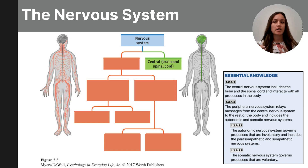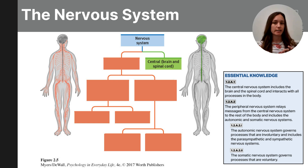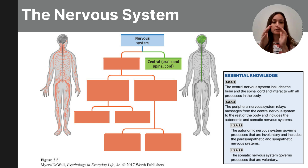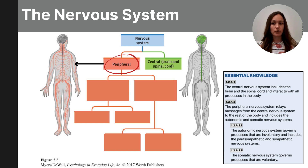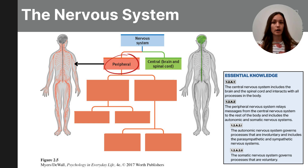Throughout this presentation I will include blue text boxes from the College Board CED so AP Psychology students can know exactly what's expected from them regarding each topic. Students should be able to explain the subsystems of the nervous system and the different subsets. The peripheral nervous system contains the nerves that branch out from the spinal column and stretch throughout the entire body.